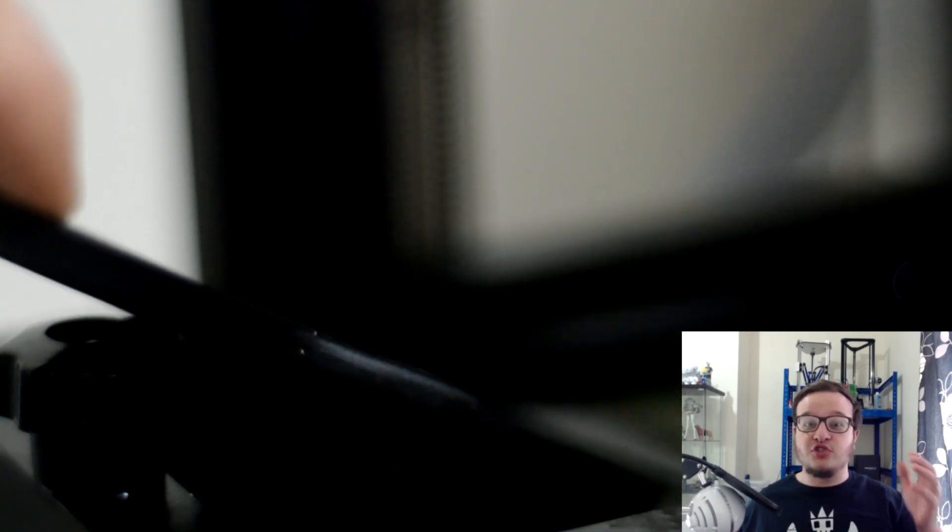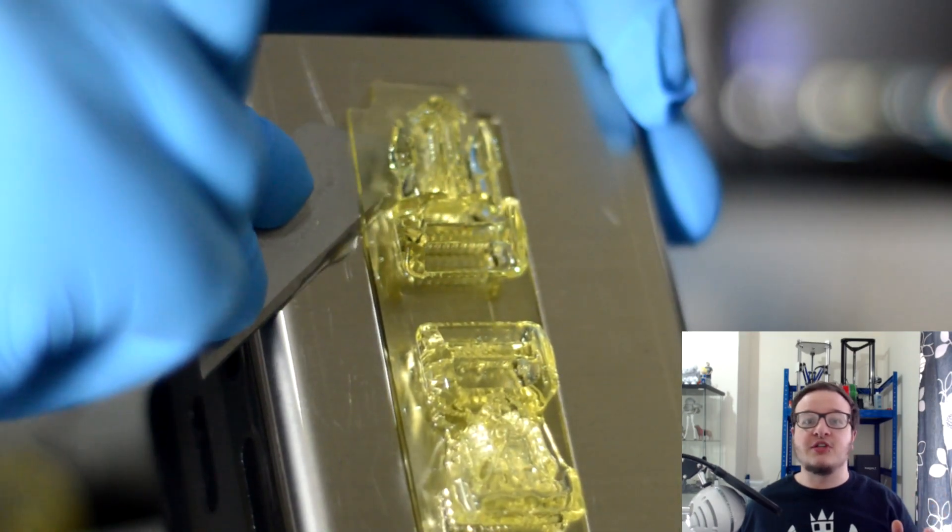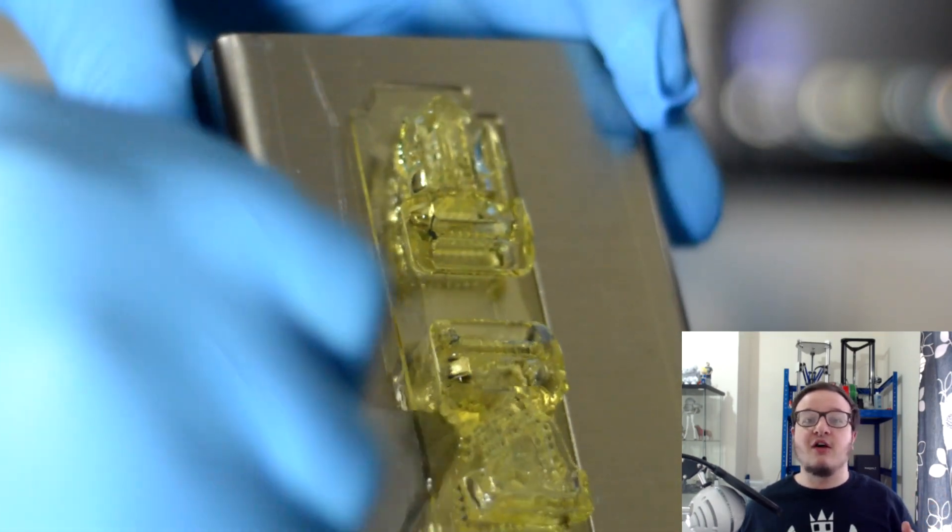The machine ships with this little scraper and at first I was taking my parts off the build plate but after someone suggested keep that just for primarily taking off any failed prints off the FEP. I've been using a razor blade to take off any prints off the build plate and it works a lot better.